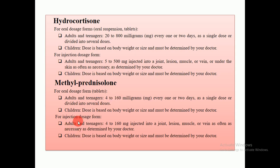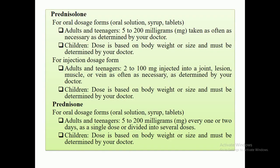For children with methylprednisolone, as already mentioned, the dose depends on body weight. For injection, it is injected into joints, lesions, muscles, or veins as determined by the doctor. The next drug is prednisolone, another corticosteroid available in oral suspension, syrup, and tablets. For adults and teenagers, the dose is normally 5 to 200 mg taken as often as necessary. For injectable dosage form, adults and teenagers receive 2 to 100 mg injected into the joint.